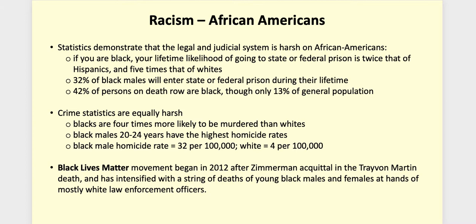People actually in jail at the time of their trial are more likely to be convicted, so your odds of being convicted are greater. And if convicted of a major felony, the odds of being sent to death row are greater if you're black than if you're white. Your lifetime likelihood as a Black person of going to state or federal prison is twice that of a Hispanic person and five times that of a white person. About one in three black males will enter state or federal prison at some time during their lifetime.